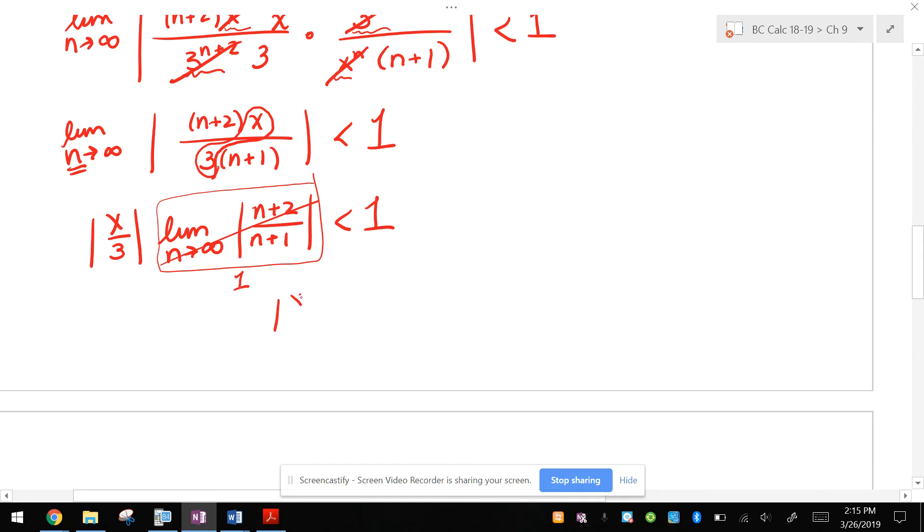So I'm left with x over 3 and an absolute value is less than 1, which then becomes x over 3 is between 1 and negative 1, because if the absolute value of x over 3 is less than positive 1, that means regular x over 3 is between 1 and negative 1. Solve for x by multiplying everybody by 3. And this is now your interval of convergence.